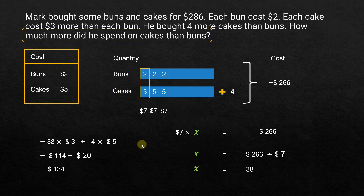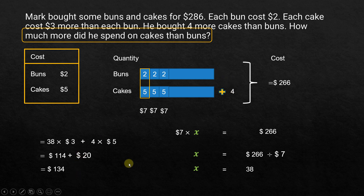So that's how we solve this. There is another method: 2 times 38 gives the cost of buns; 5 times 38 plus 4 times 5 gives the total cost of cakes. Subtracting them gives the same answer. But the method shown here is shorter because we already know the difference per item and the number of items.